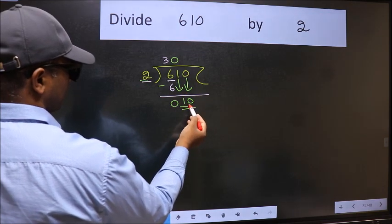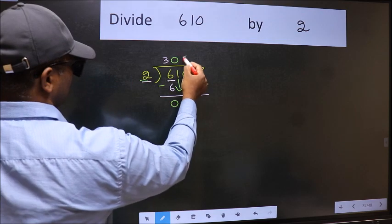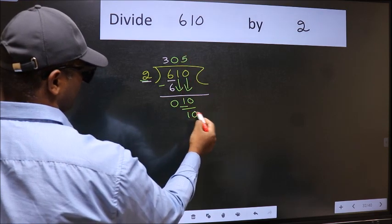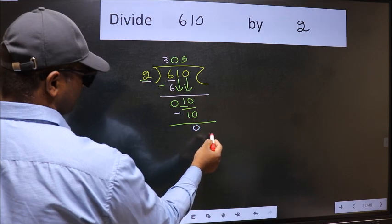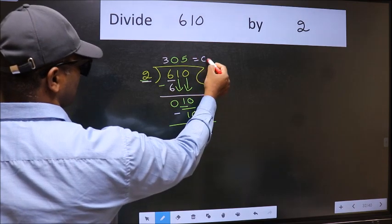Now 10. When do we get 10 in 2 table? 2 times 5 is 10. Now we should subtract. We get 0. So this is our quotient.